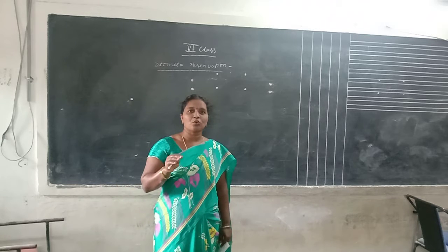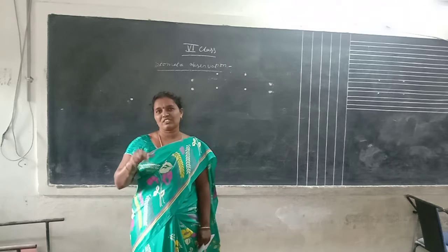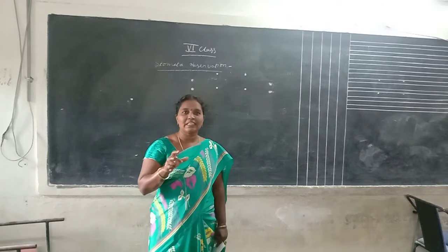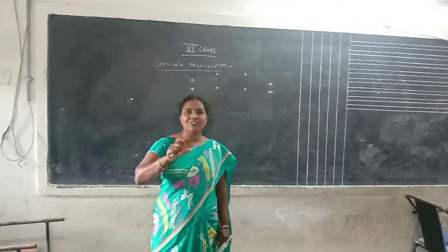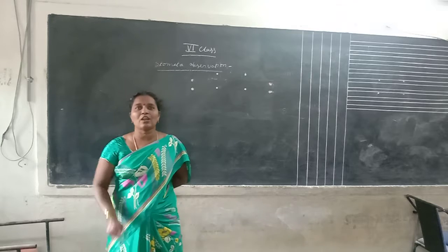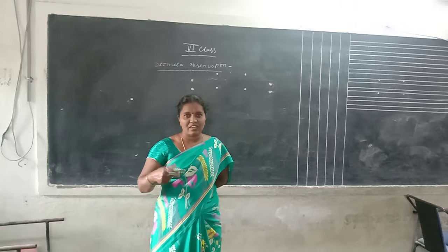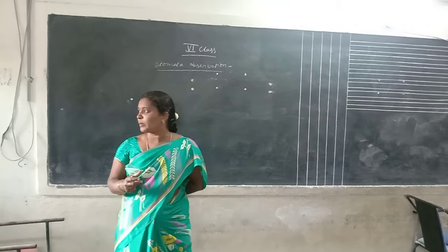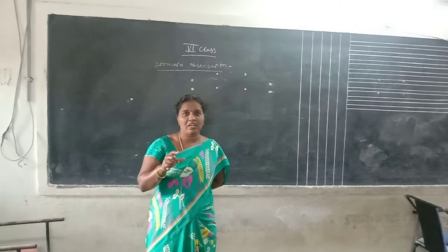Now today we will discuss about the Stomata Observation. What is the stomata? Stomata are present in a leaf. They are present on the upper surface of the leaf and the lower surface of the leaf.